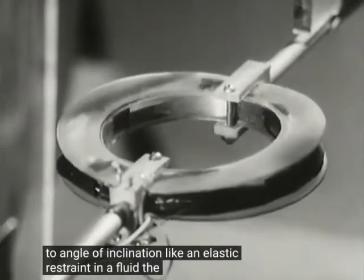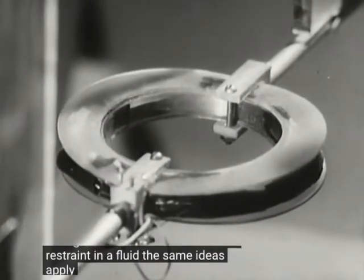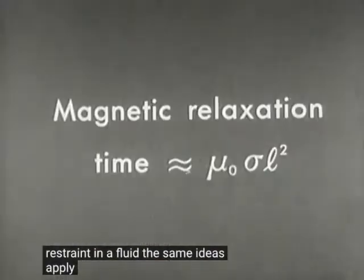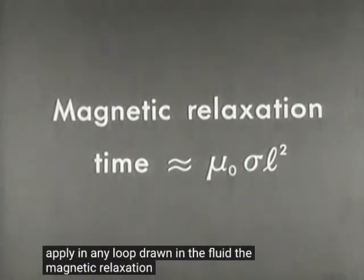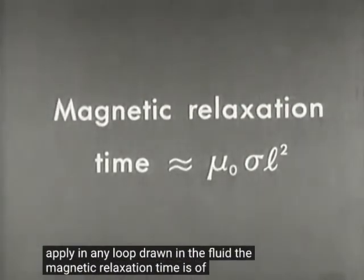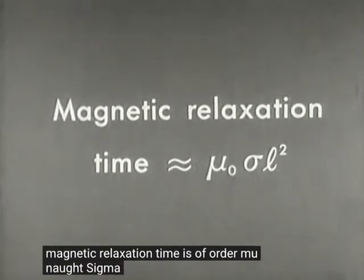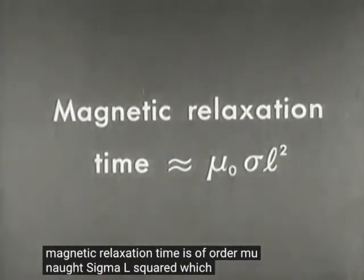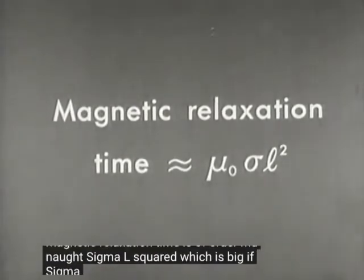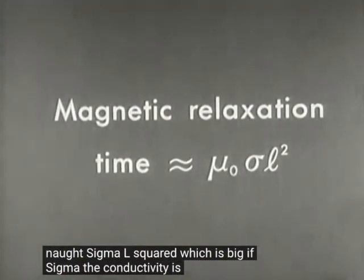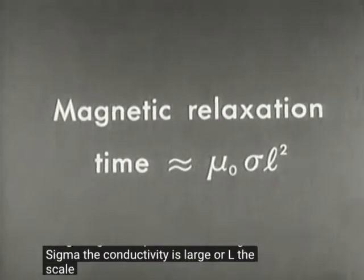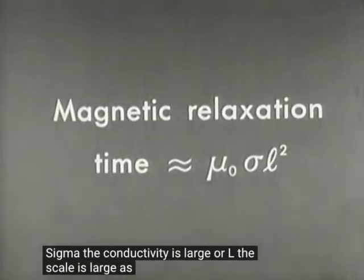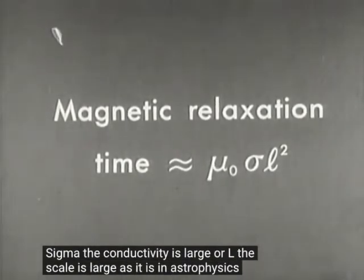In a fluid, the same ideas apply. In any loop drawn in the fluid, the magnetic relaxation time is of order mu naught sigma L squared, which is big if sigma, the conductivity, is large, or L, the scale, is large, as it is in astrophysics.